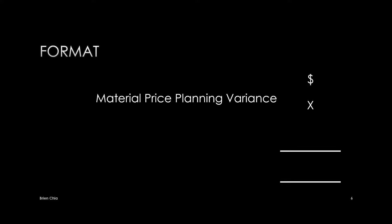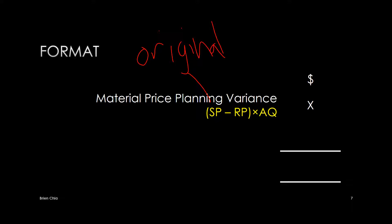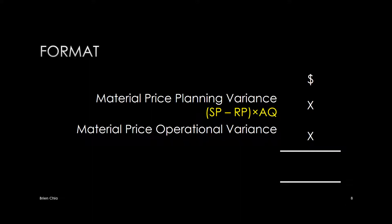Now we'll go to the format. The format has three different levels. The first level is the material price planning variance. The formula is the standard price — from the original budget — minus the revised price from the revised budget. So they are both budgeted prices, not real. Multiply by the actual quantity.